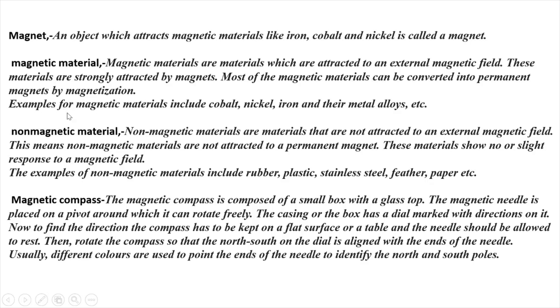Examples of Magnetic Materials include Cobalt, Nickel, Iron, and their metal alloys. This is known as Magnetic Materials.